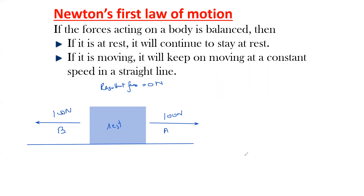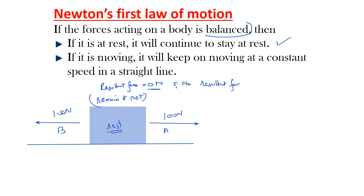When the resultant force is zero newtons — or there is no resultant force — if this object was initially at rest, it will remain at rest. It does not move at all. That is the first statement: if an object is acted upon by a balanced force — meaning the resultant of the forces is zero — we call them balanced forces. According to Newton's First Law, a stationary object will remain at rest even though forces are acting on it.